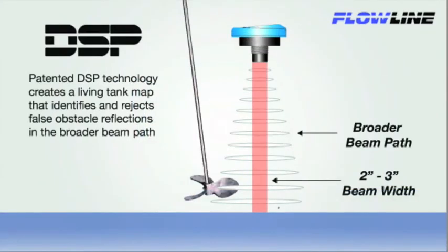Flowline's digital signal processing or DSP technology creates a living tank map that identifies false obstacle reflections in the full beam path. DSP is able to filter out false obstacle reflections and track the true level of liquid.